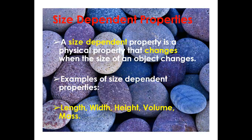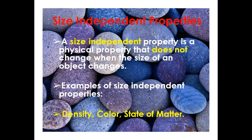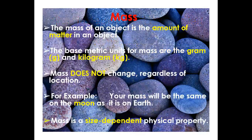Properties are sorted into two groups: size-dependent and size-independent. A size-dependent property is a physical property that changes when the size of an object changes — examples include length, width, height, volume, and mass. A size-independent property does not change when the size of an object changes — examples include density, color, and state of matter.